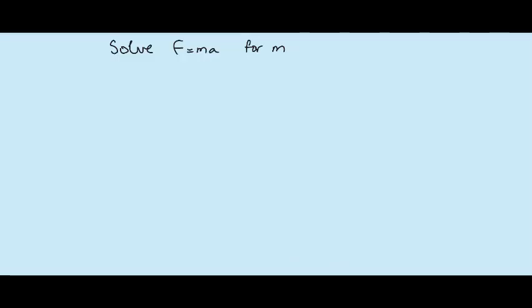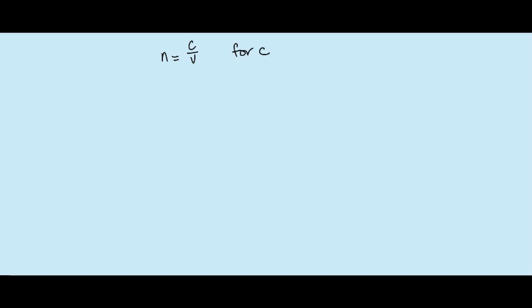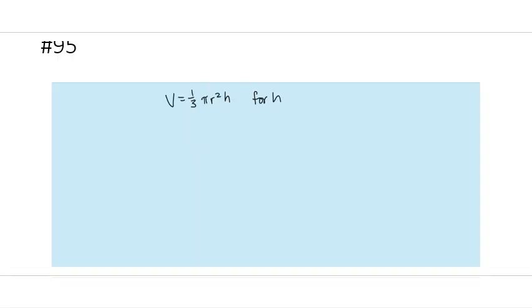We're solving literal equations. First, solve Force equals mass times acceleration (F = ma) for m. We need to isolate m, so we divide both sides by A — division property of equality — giving m equals F over A. Next, solve n equals c over v for c. Since c is divided by v, we multiply both sides by v, giving vn equals c.